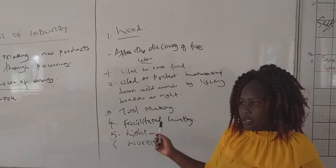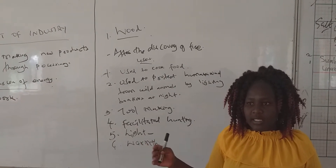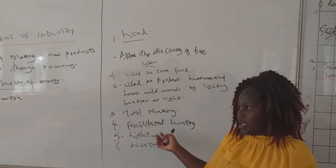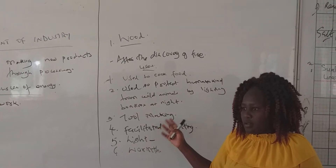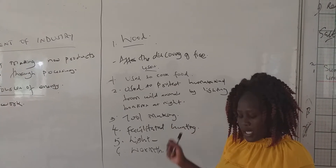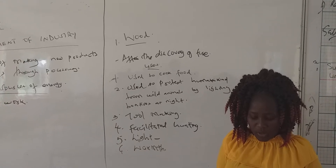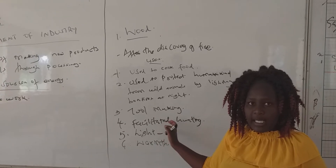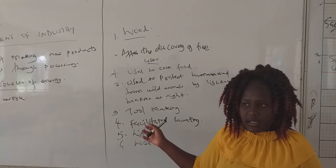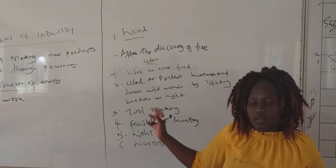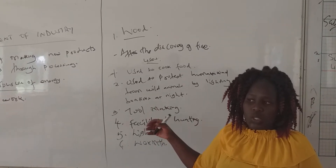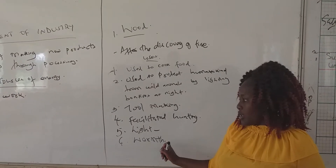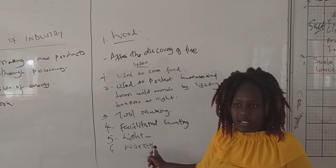Another use: it also facilitated hunting. At times they used to light fire and it attracted some animals, and then they would get some meat. It also provided light at night, because at that time there was no electricity — they were using firewood to get some light at night. And they also used it to get some warmth.